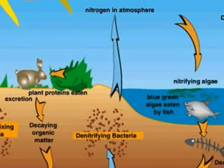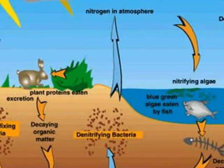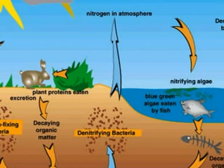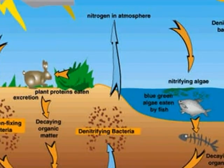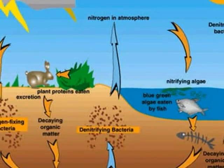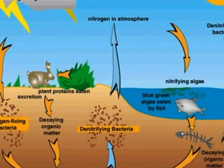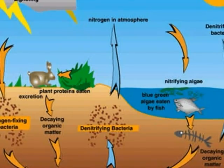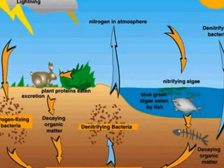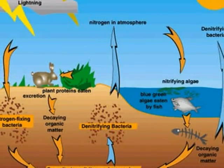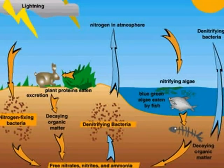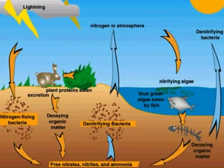In conclusion, nitrogen is an important element in our atmosphere. Without nitrogen, we wouldn't be able to live. Nitrogen is what makes the sky blue and is what the plants need to stay alive. That brings an end to my photo story element presentation on nitrogen.